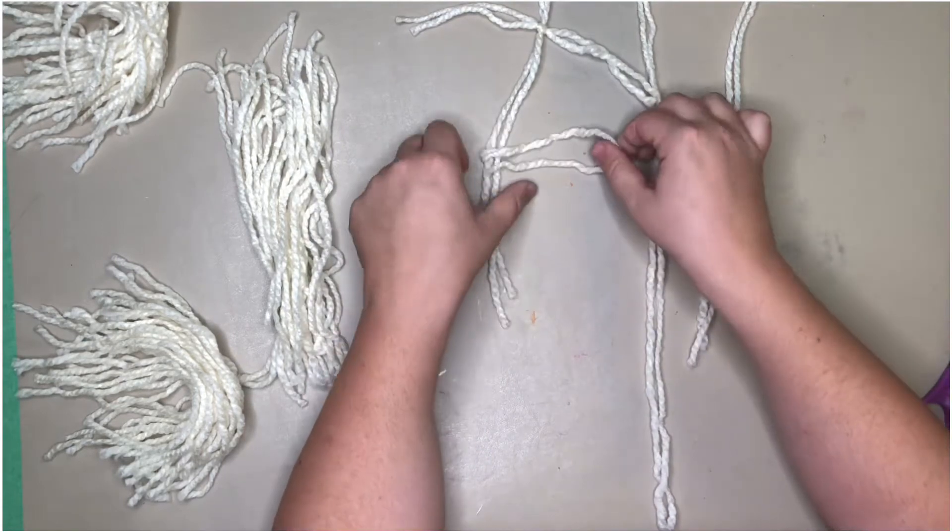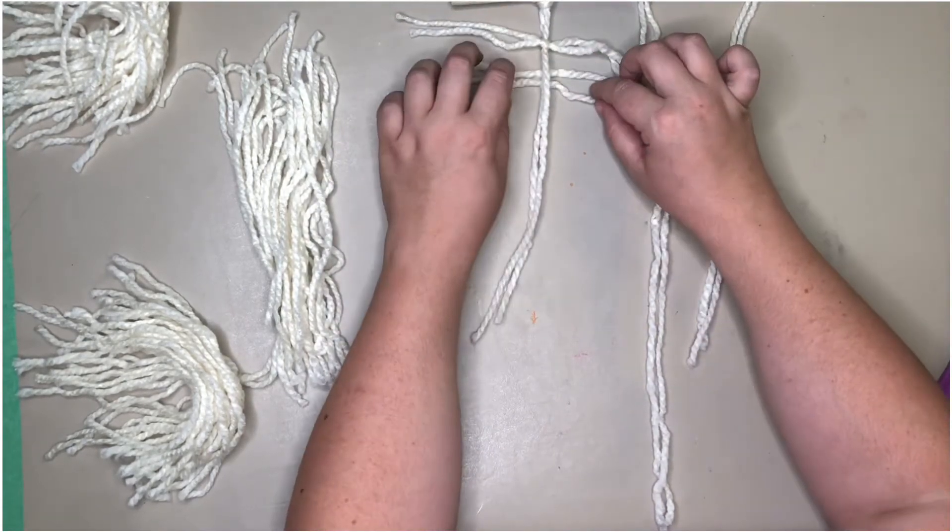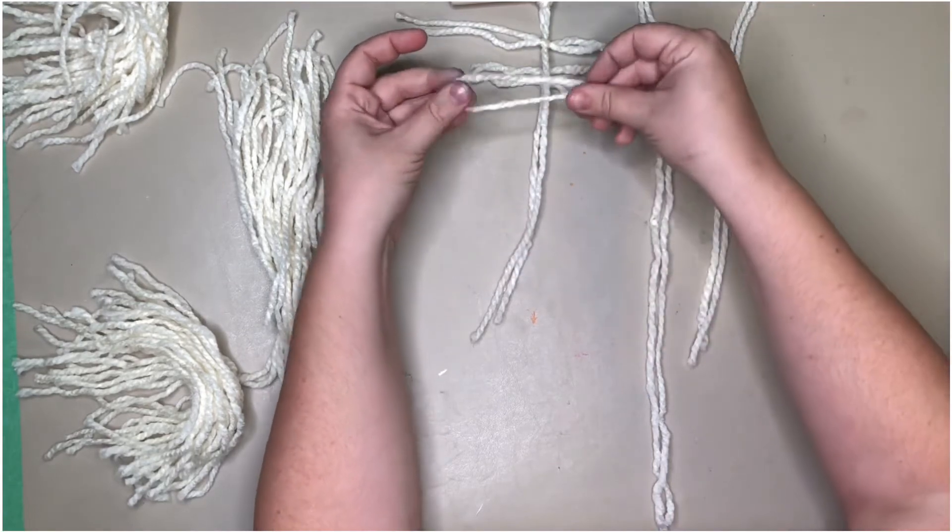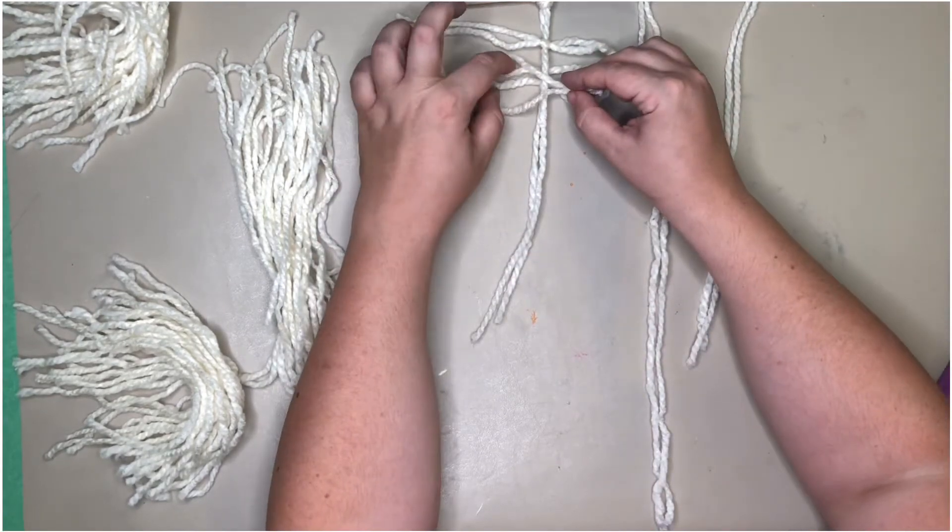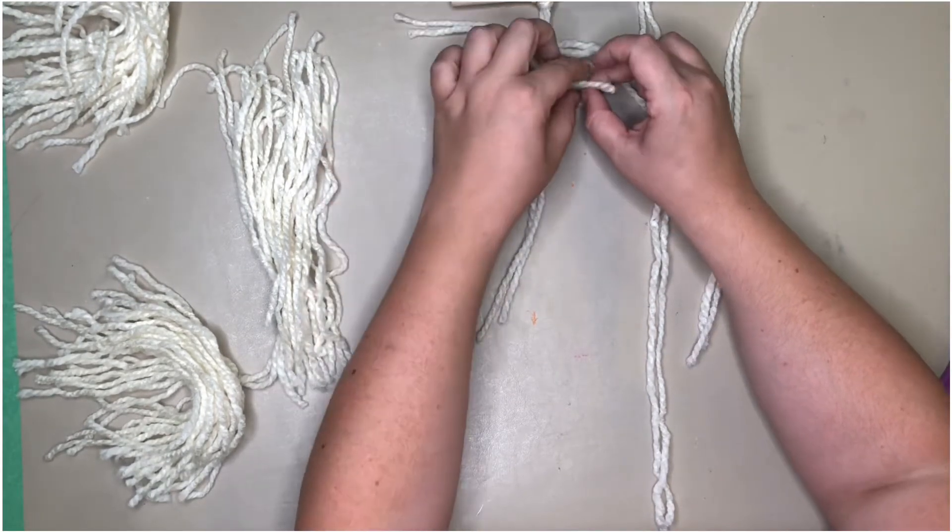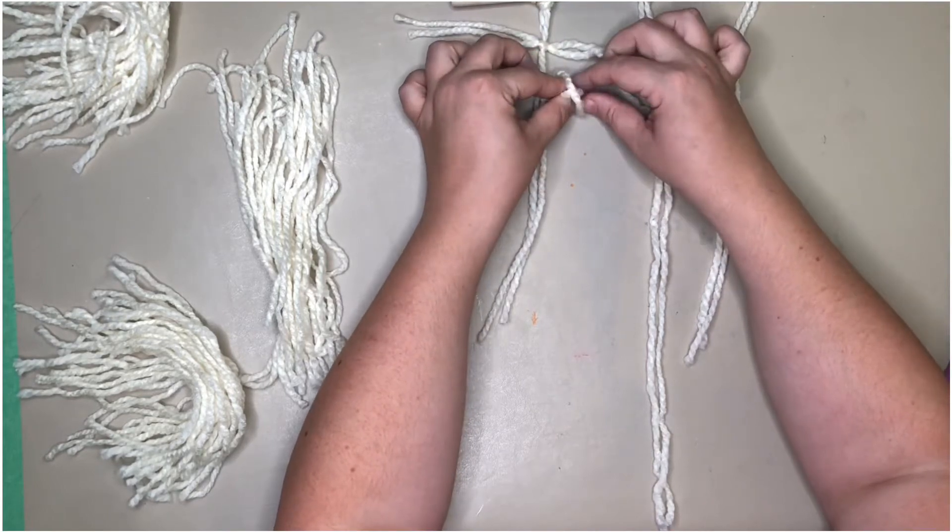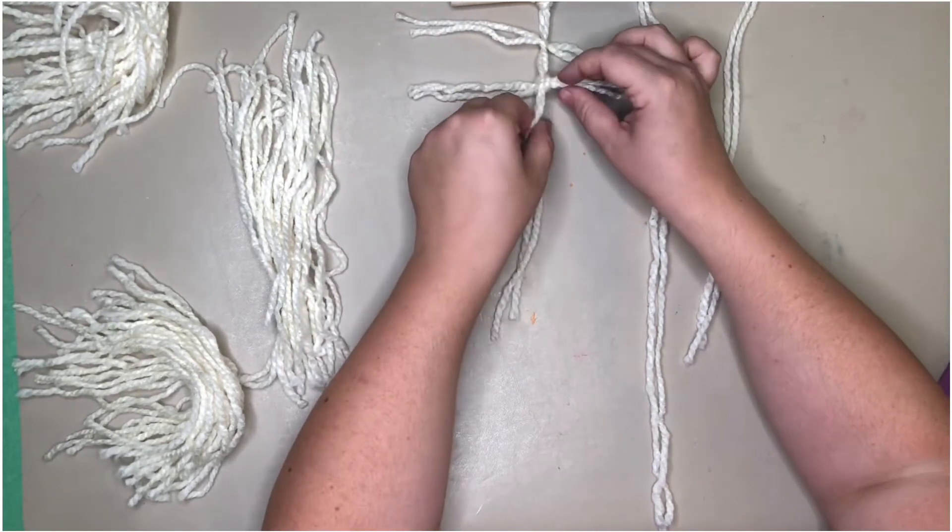So for each loop you need two, so you fold it in half. Then you're going to go every other direction - string through the hole, string through the other, pull tight, and shimmy it up to the next one.